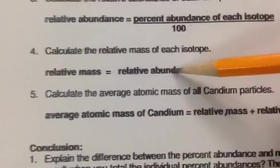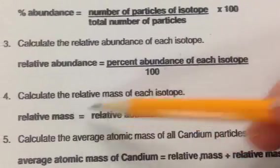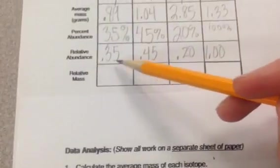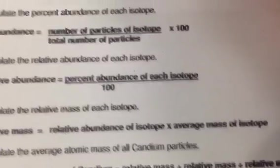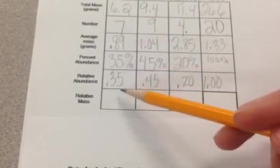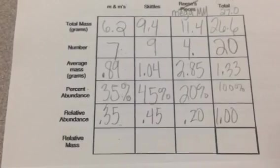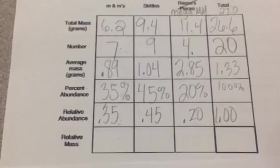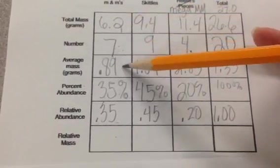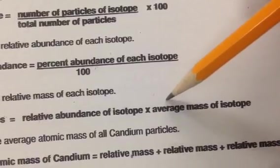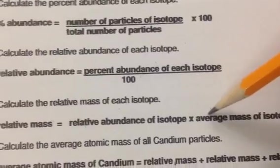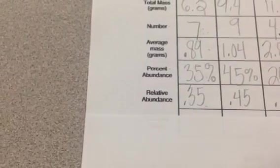And then our relative mass is going to be the last one, or almost the last one. Relative mass equals the relative abundance, which we just now did, times the average mass of the isotope. So it's going to be this number times this number to give us our relative mass. So 0.35 times the mass, which remember, you might want to double check, and it does say the average mass. The average, because you've got two masses, you want to go with the average mass because you're doing it per isotope. So relative abundance, 0.35 times average mass, 0.89.